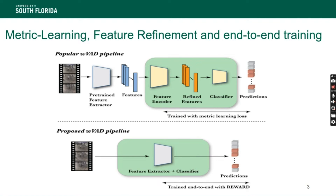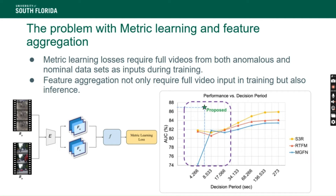End-to-end training could have several advantages such as speed and data efficiency. We could also expect a bump in accuracy since we are leveraging all the layers inside the feature extractor. But what are the problems when we try to train something end to end?